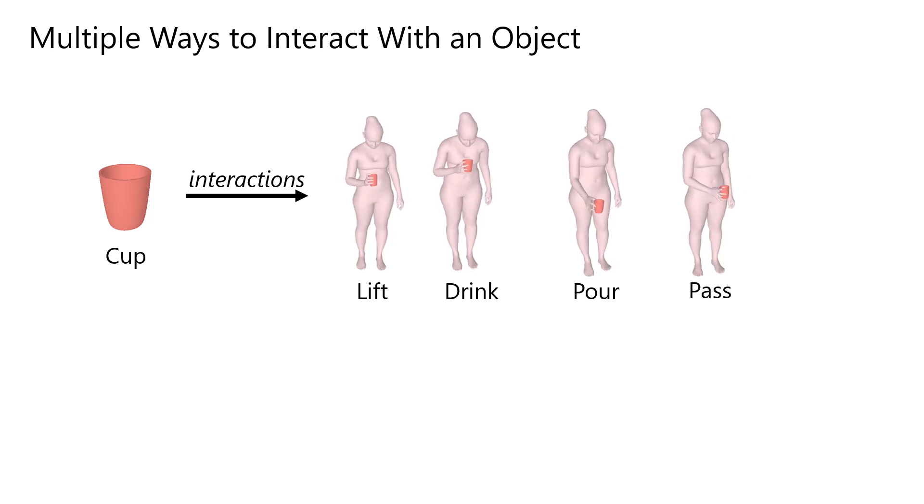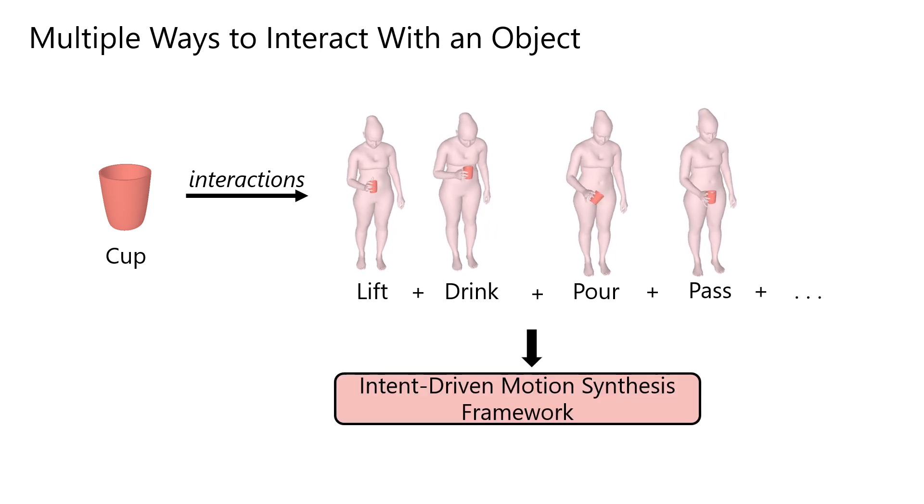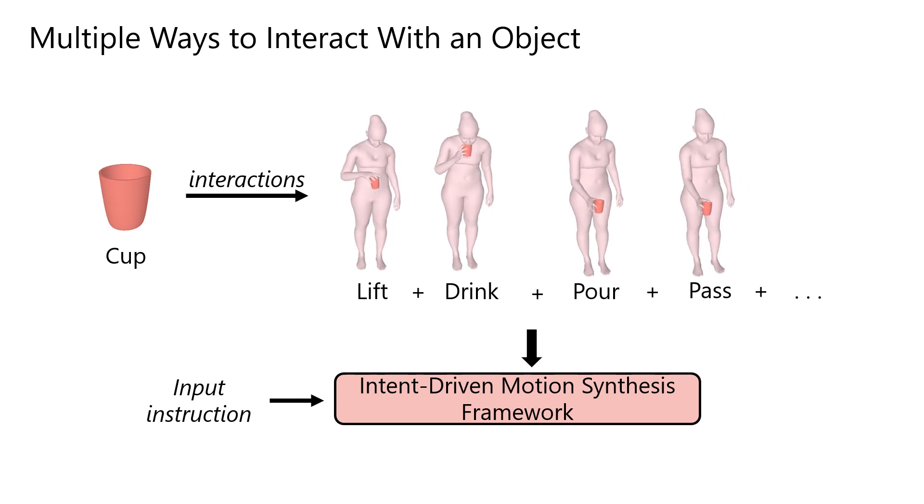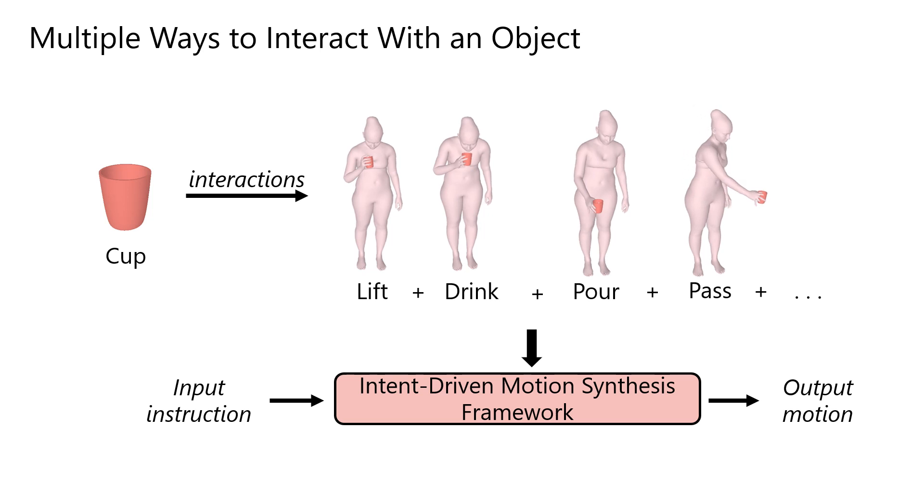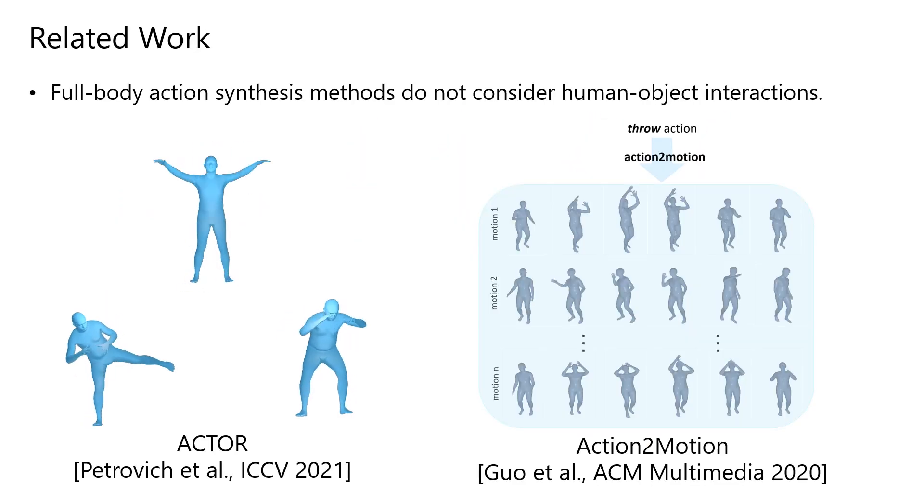Instead of modeling these interactions in 3D manually, an alternative is to learn a motion synthesis framework that accepts an instruction label depicting the object used and the action performed and automatically synthesizes a diverse set of desired motions. Existing works on full-body motion synthesis do not consider human-object interactions. They synthesize human motions based on an action label only.